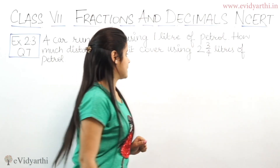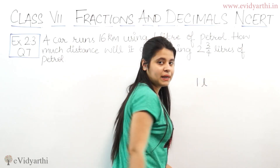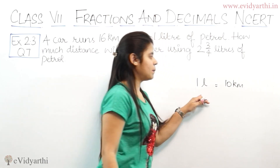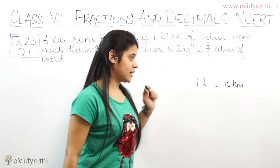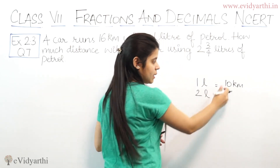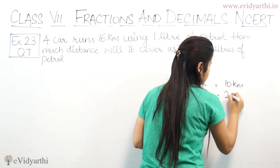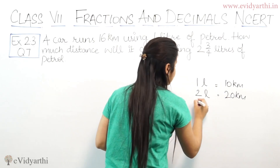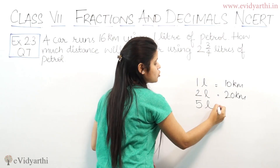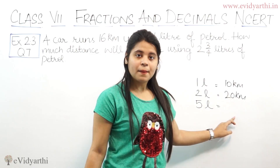Let's take a simple example. Suppose a car has 1 litre of petrol and it covers 10 km. If you have 2 litres of petrol, how much will it cover? It will be double — so it will be 20 km. Now, if you have 5 litres of petrol, it will be 50 km.